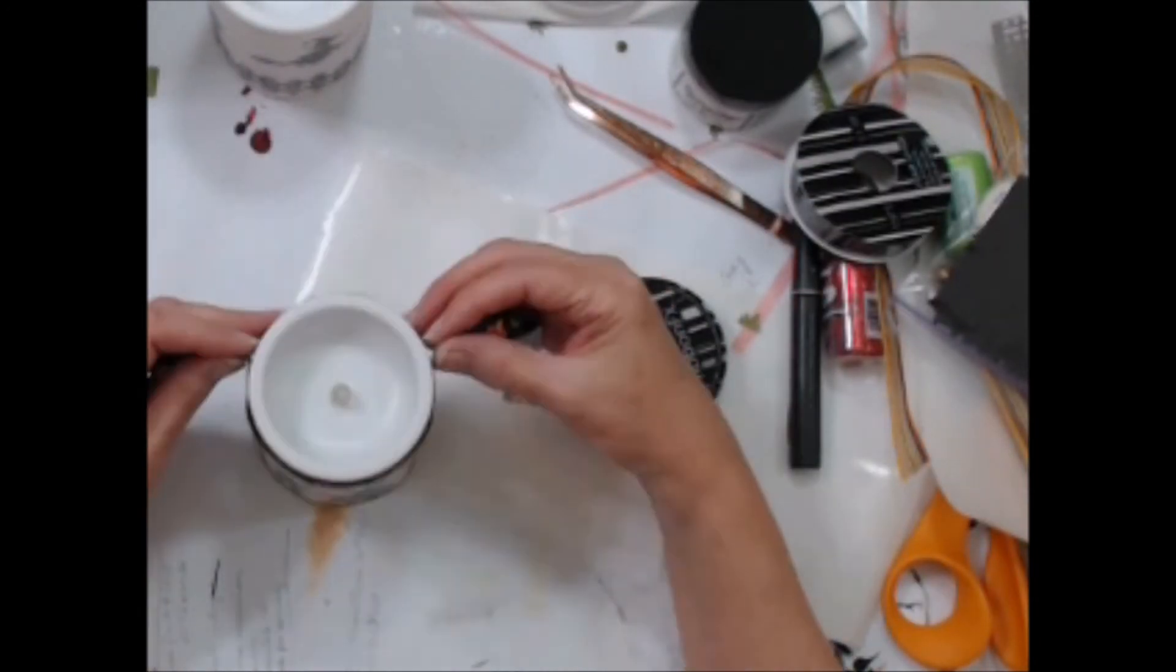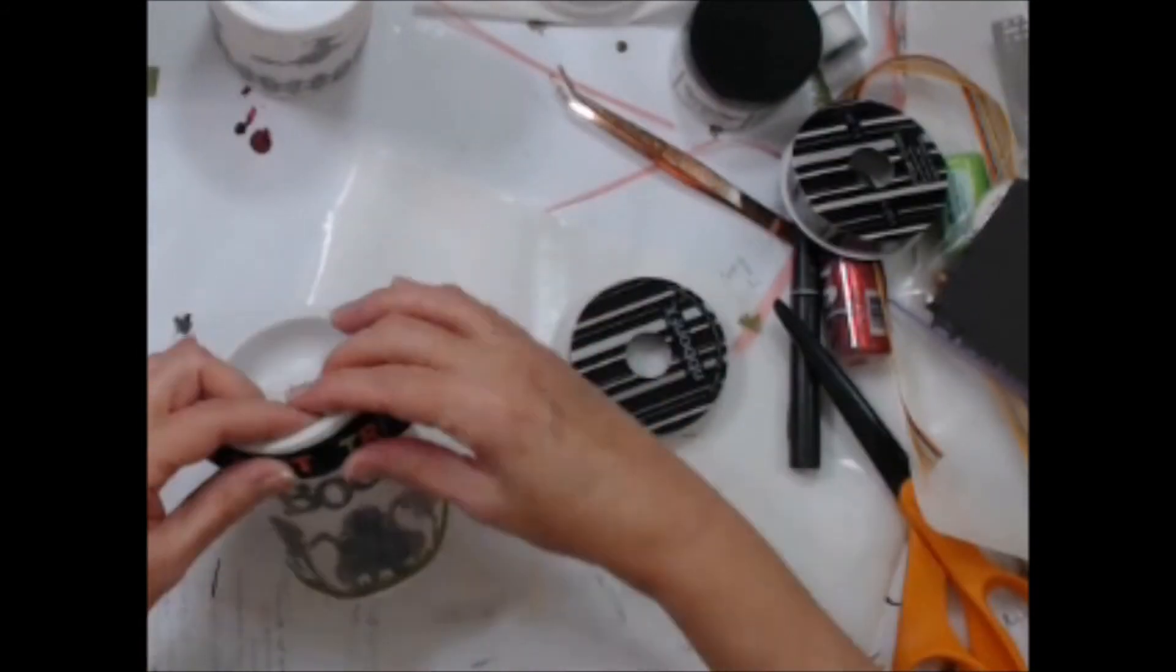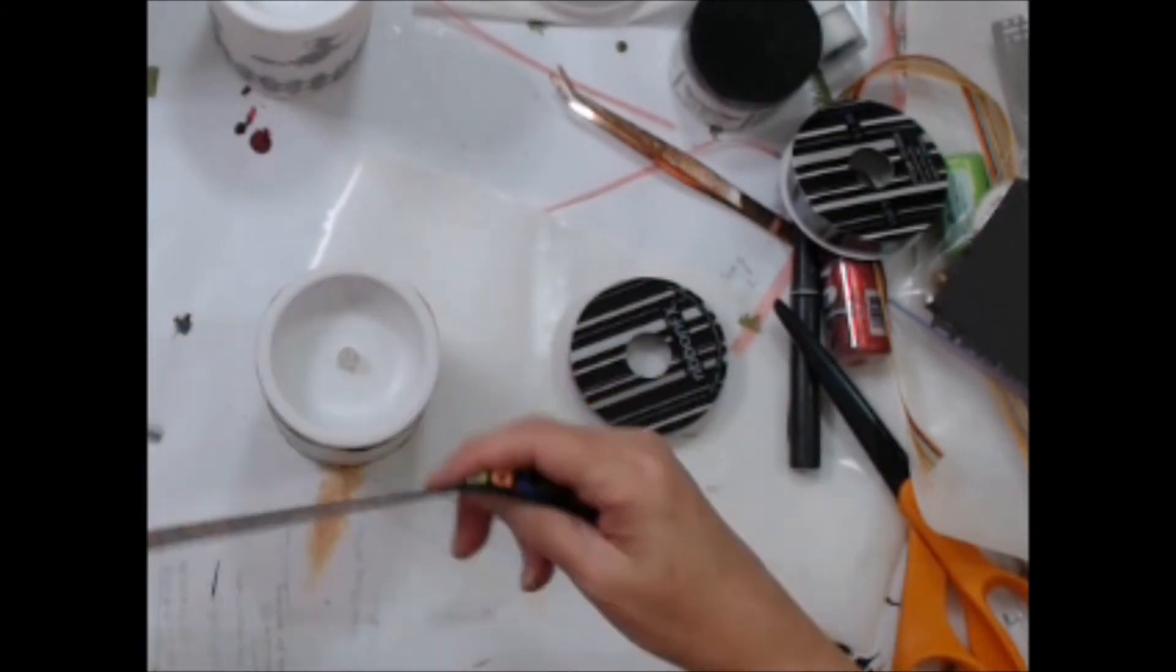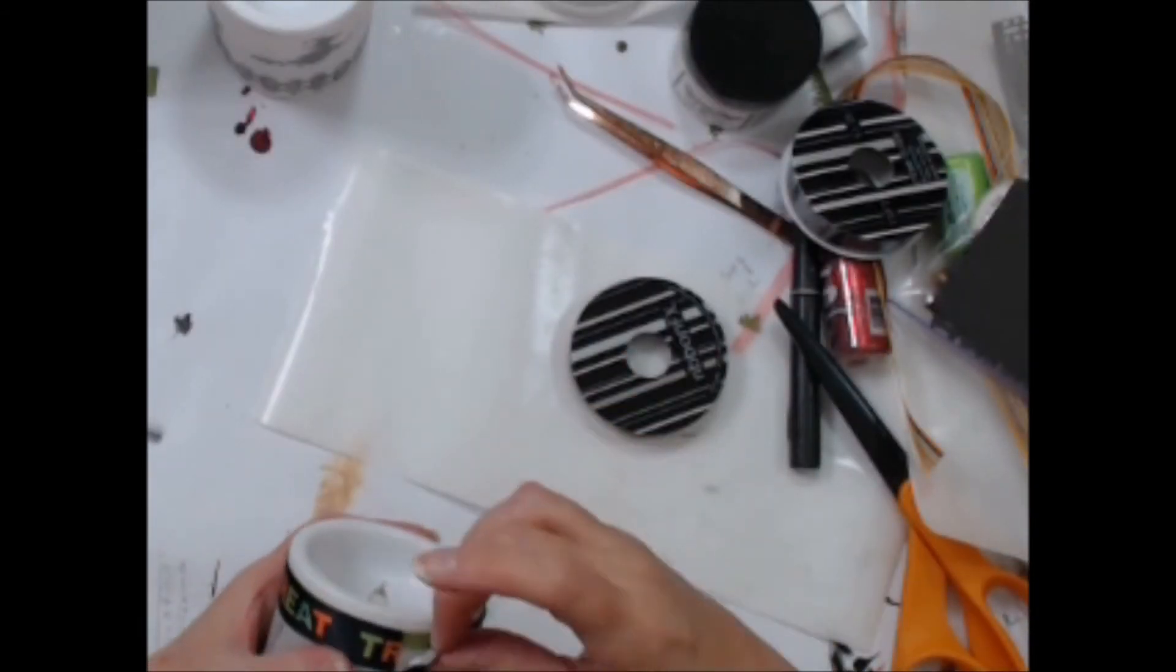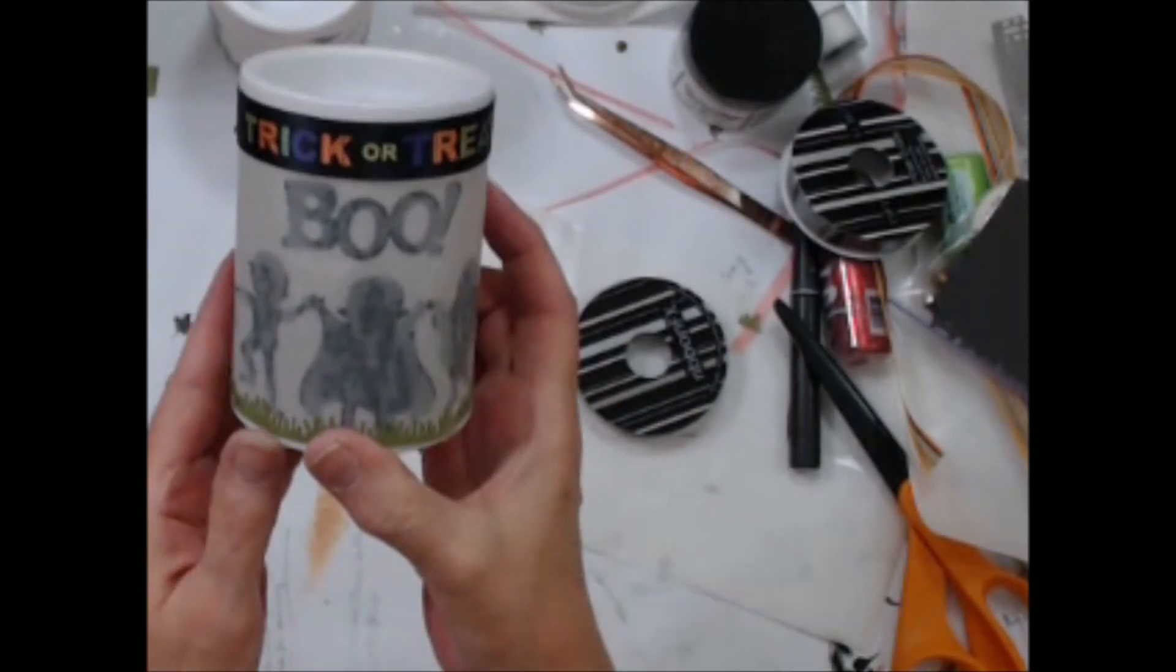After I glued the paper strip down, it dawned on me that I had some Halloween ribbon somewhere in my stash, and when I found this trick-or-treat ribbon, it was perfect for my trick-or-treaters candle. So I simply glued it over the green paper strip.